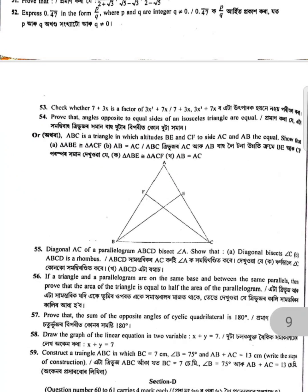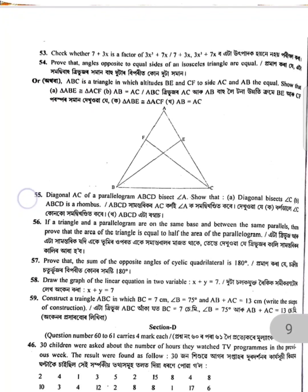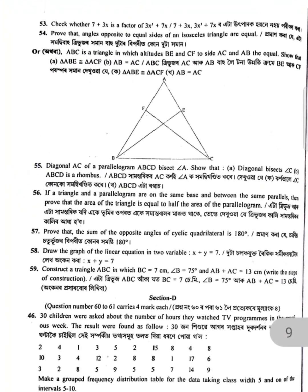The diagonal of AC is in a parallelogram ABCD. Angle A is given, so that the diagonal bisects angle CAB. Also prove that in a rhombus, the sum of the opposite angles equals a given value.